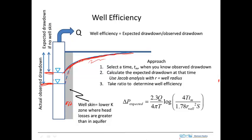We want to characterize this, and one way to characterize it is to use the well efficiency, which is the ratio of the expected drawdown from our theoretical analysis to the observed drawdown — what actually occurs in the field. We need a way to calculate the expected drawdown, and we can do this with the Jacob analysis.